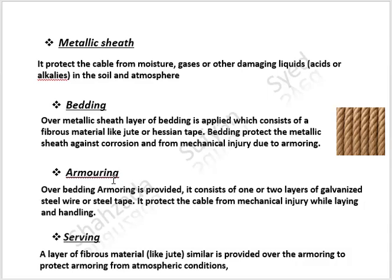Over the bedding is a layer of armoring. Armoring consists of one or two layers of galvanized steel wire or steel tape. The galvanizing involves coating of a stainless steel wire, and this coating protects the cable from mechanical injury while laying and handling. Above all of them is a layer of serving, which is a fibrous material like jute, provided over the armoring to protect it from atmospheric conditions.